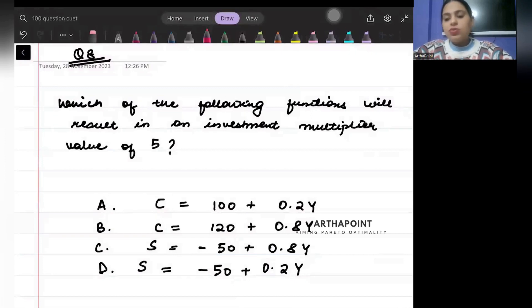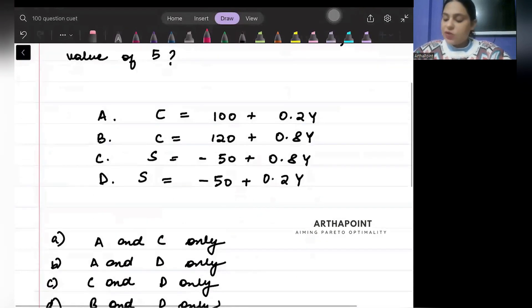Welcome to day eight of your CVT 100 questions series. Today we are going to take a question based on economics. Let's read the question. Which of the following function will result in investment multiplier value of five?